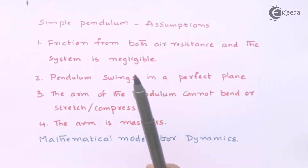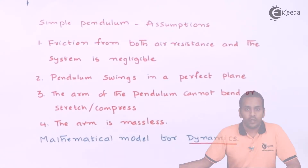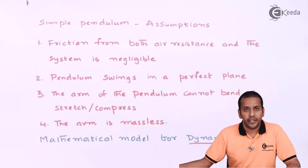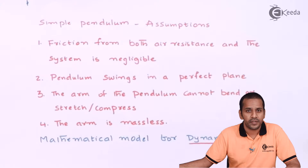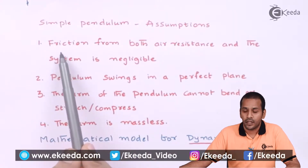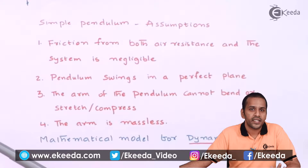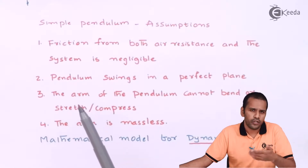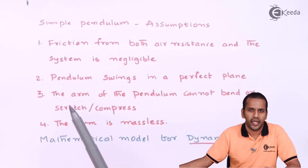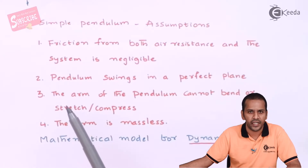The first problem is on dynamics. Let us derive a differential equation for the motion of the simple pendulum. For any analytical model we need some assumptions. Assumption one: friction from both air resistance and the system is negligible — there is no drag force acting on the simple pendulum and no friction at the hinge joint.